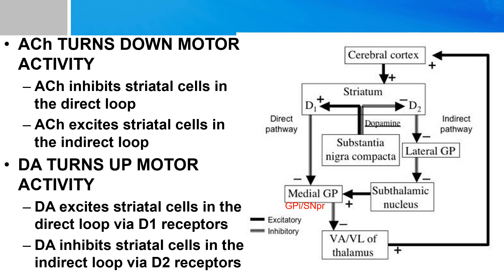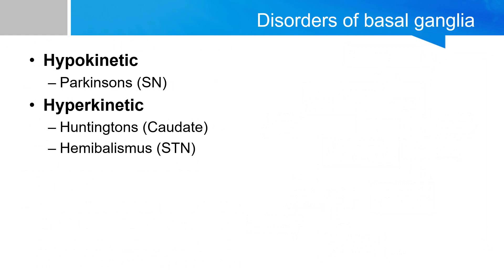This is a summary of what we just discussed, and it's very important that you memorize these pathways because there will invariably be questions on them. Damage to specific basal ganglia structures can cause two different classes of syndromes. One type is characterized by decreased movement — hypokinetic movement disorders — the classical example being Parkinson's disease, mediated by substantia nigra destruction. The other type is characterized by increased movement — hyperkinetic movement disorders — with classical examples including Huntington's disease from destruction of the caudate nucleus and hemiballismus from destruction of the subthalamic nucleus.